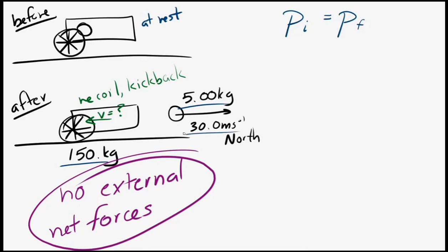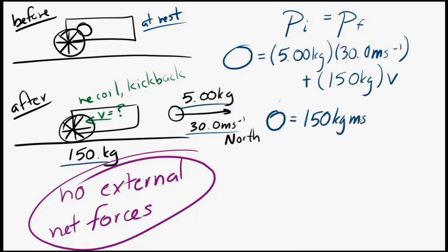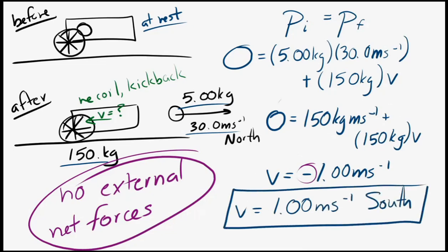The cannon has a mass of 150 kilograms and the cannonball has a mass of five kilograms moving at 30 meters per second north. Initially, the total momentum was zero, so pi equals pf. We calculate the momentum of the cannonball and set that equal to the total final momentum including the cannon. Solving, the cannon's final velocity is negative, meaning it moves to the south — the cannonball goes north and the cannon recoils south, explained by conservation of momentum.